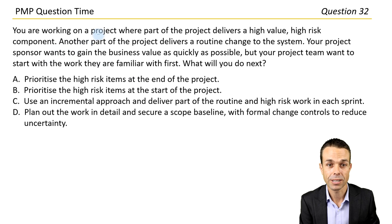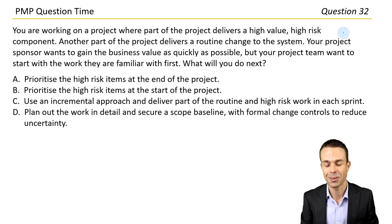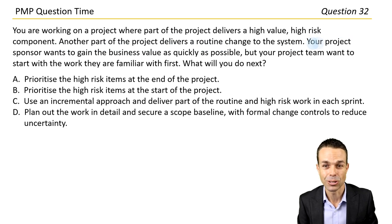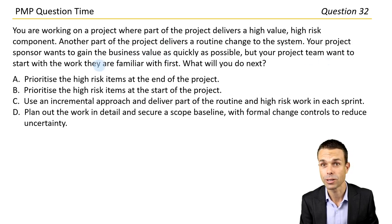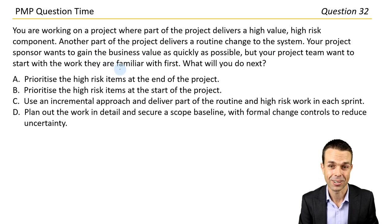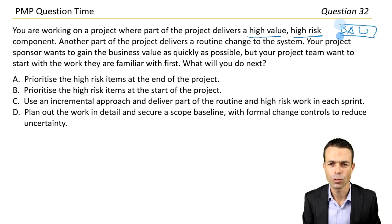You're working on a project where part of the project delivers a high-value, high-risk component. Another part of the project delivers a routine change to the system. Your project sponsor wants to gain the business value quickly, but your project team want to start with the work that they're familiar with first. What will you do next? So we've got high-value, high-risk components and also BAU work — people want to start with different things.